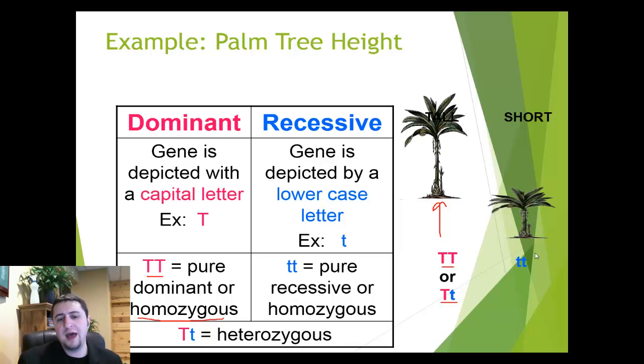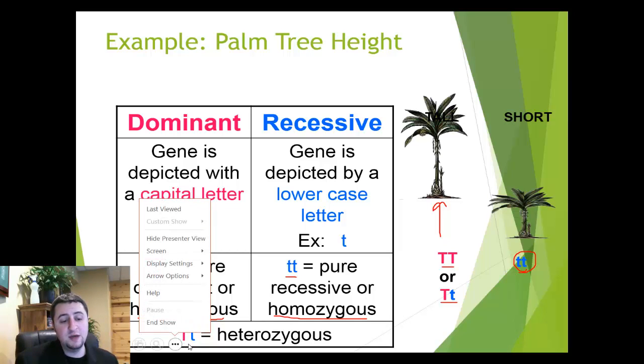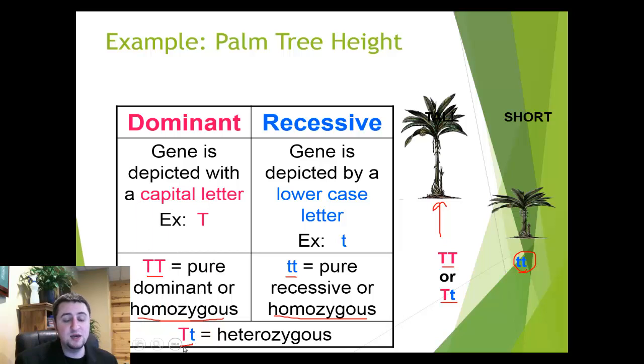If that little tree there is little t, little t, we call that being pure recessive or homozygous recessive. Now what's kind of interesting is that if we have one of each, so if we have big T, little t, we call that being heterozygous. And really ultimately there is only one way to be heterozygous, having one of each. So hetero is a Latin word which means other, thus each one of those is different. So that's where we get the term heterozygous.